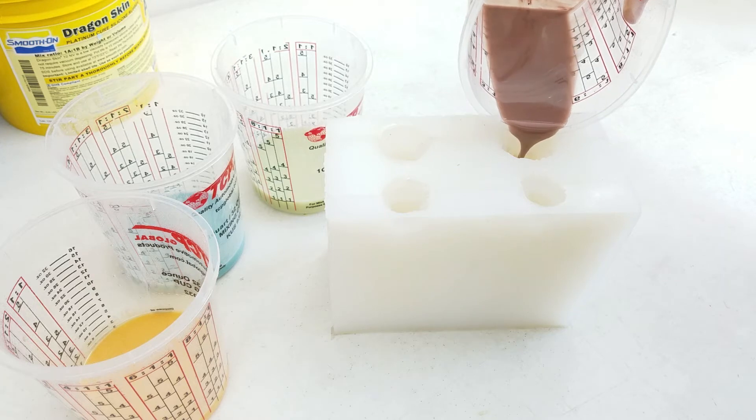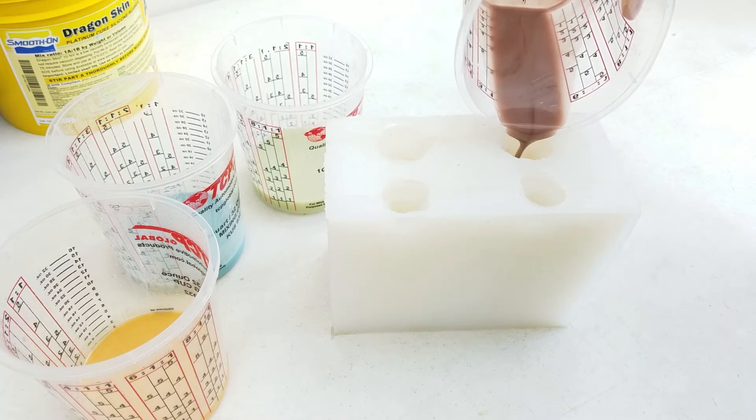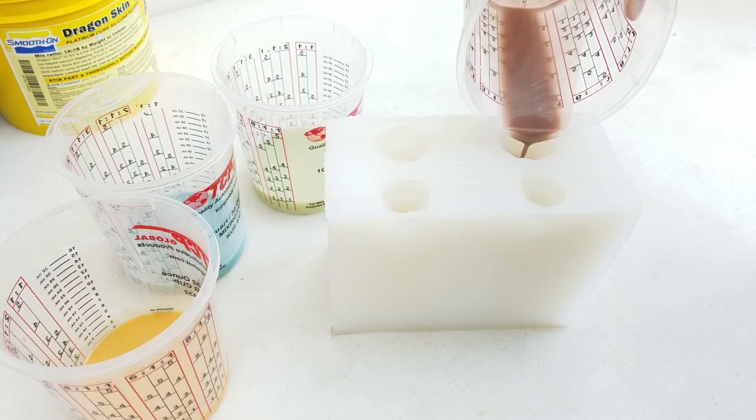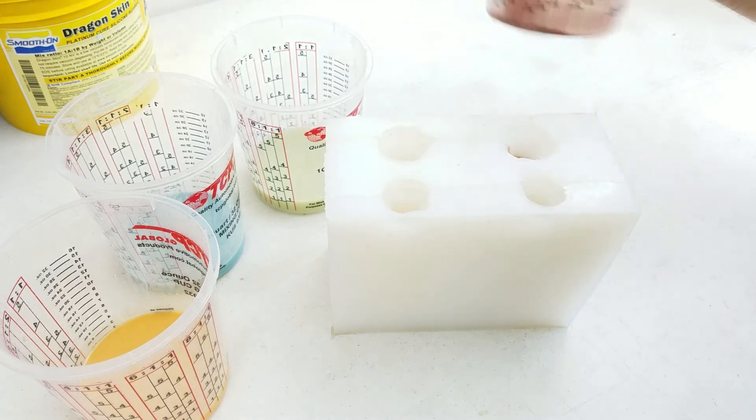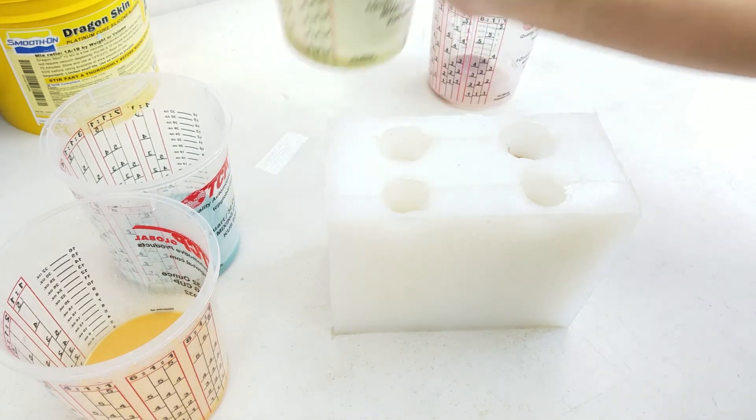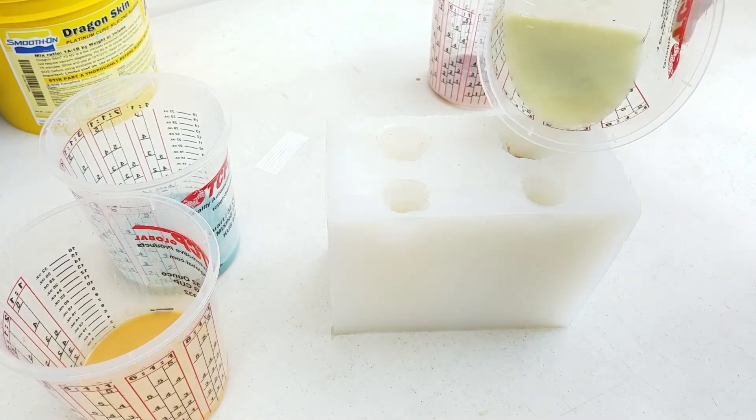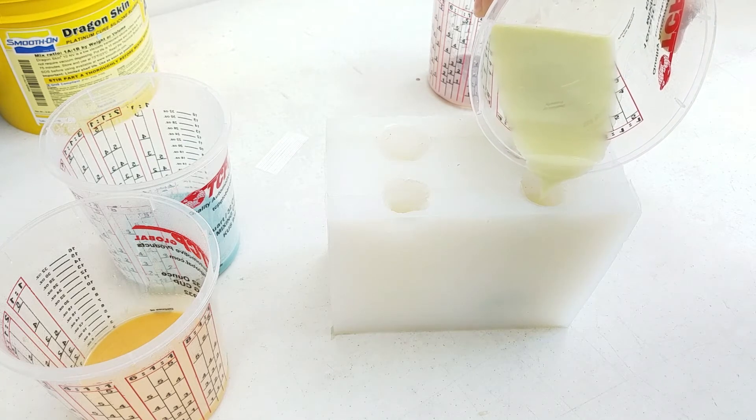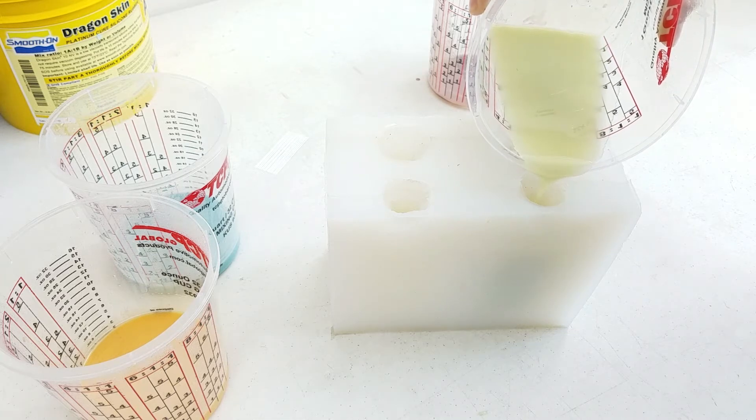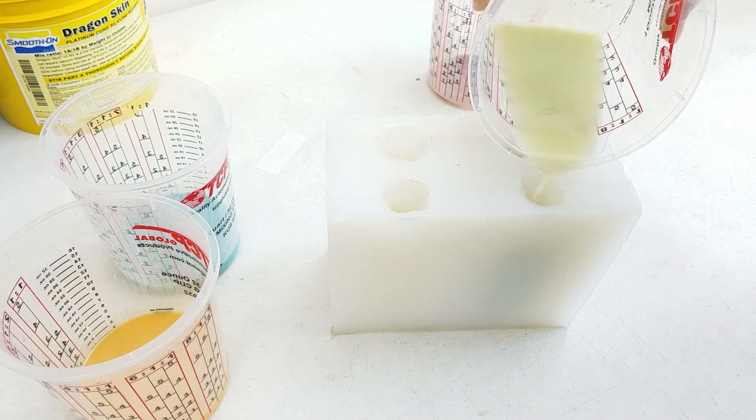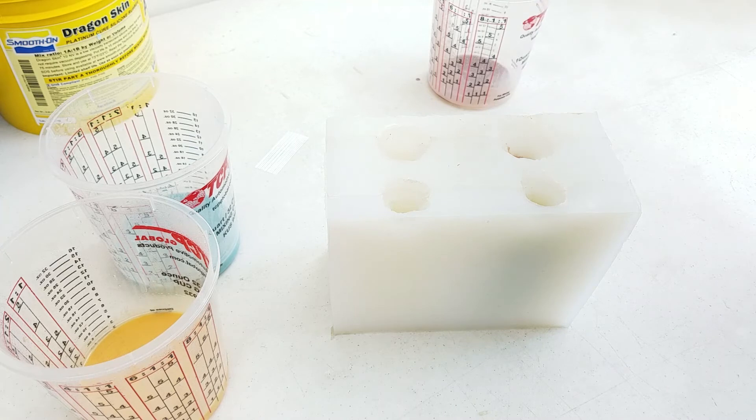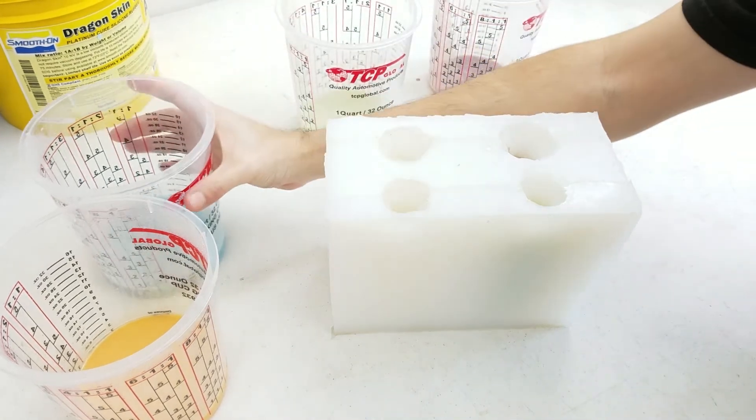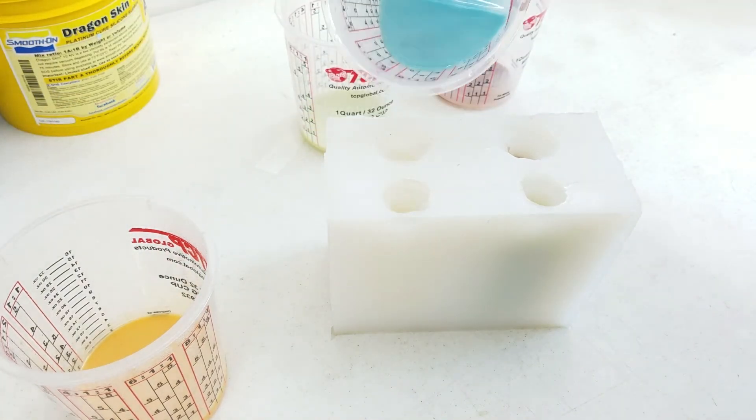Here it might be important to note that you want to make sure you close your mighty mold fully. During our first pour we had not fully closed this mold after opening it to demonstrate it to you guys and we had a little bit of leakage issues. But as you can see we're about two bars into this pour now and there is no leaking at all and that's simply because we made sure to close the mold.